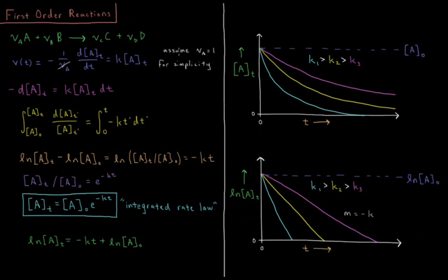For simplicity here, I'm assuming that the stoichiometric coefficient on A is just equal to one. So what we have here is the derivative of concentration with respect to time equals a constant times the concentration.